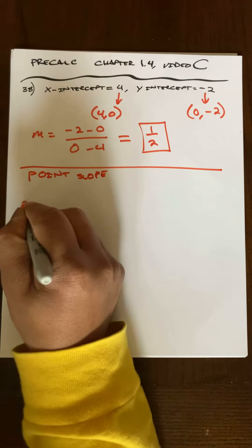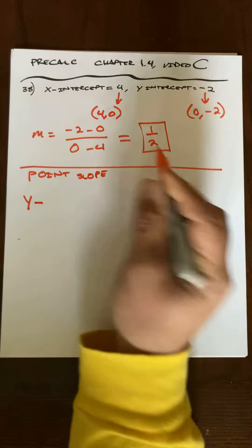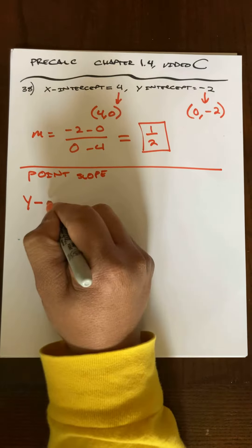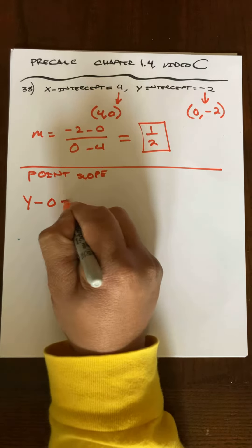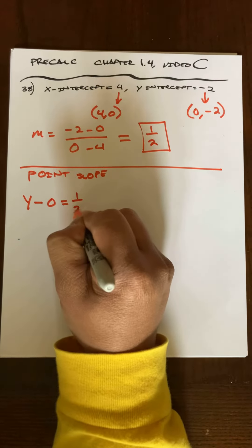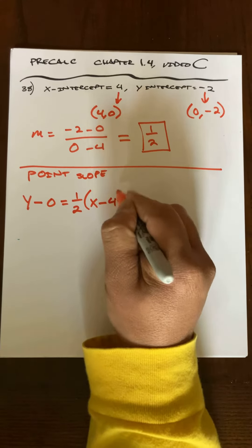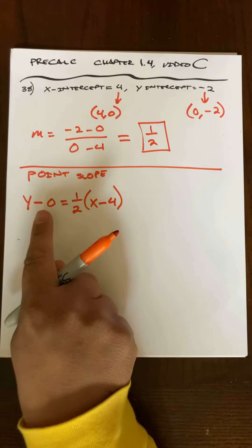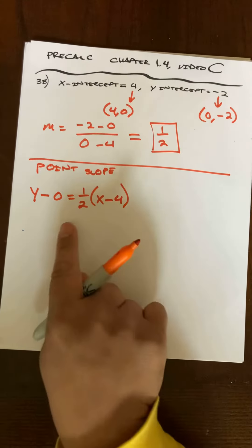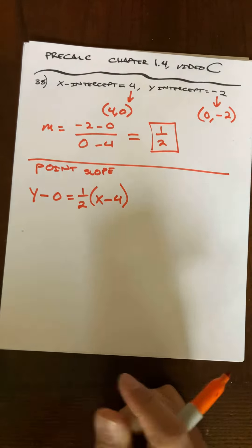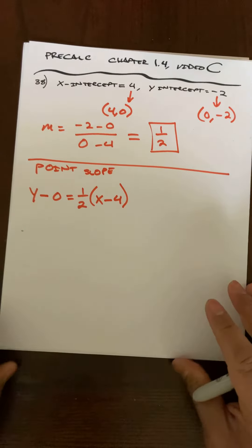Point-slope: y minus y1 is equal to the slope times x minus x1. Okay, and I didn't have to use this point exactly. I could have used this point as well, and it would be exactly the same graph and the same equation.